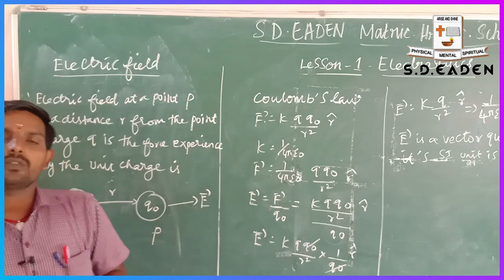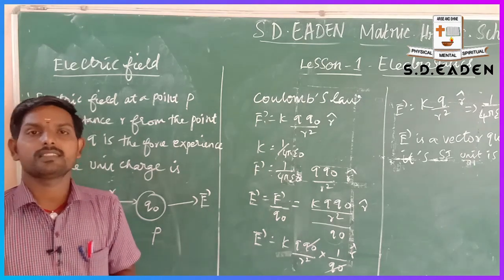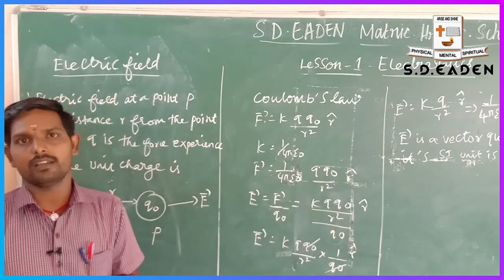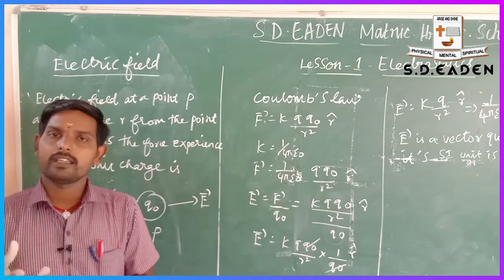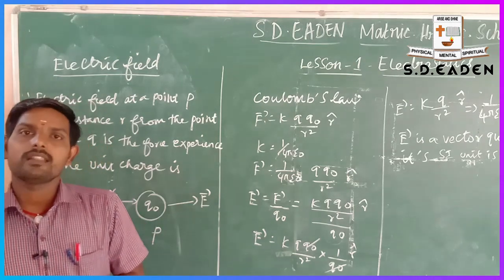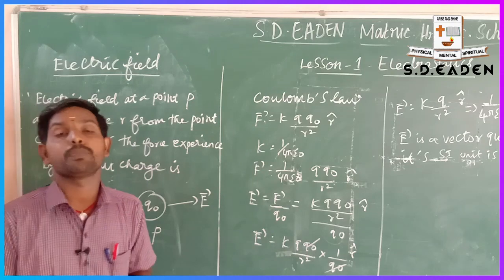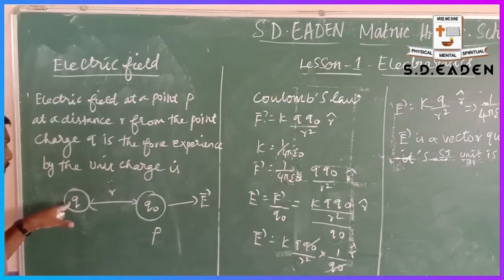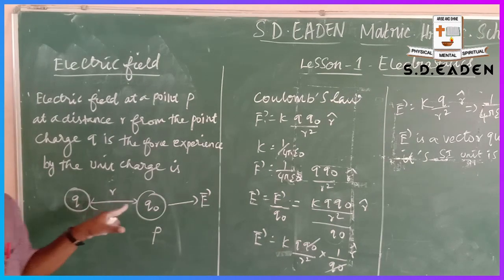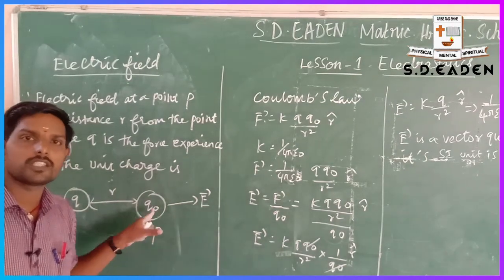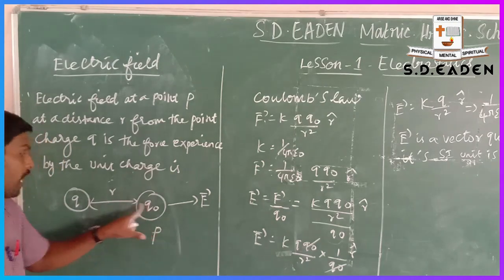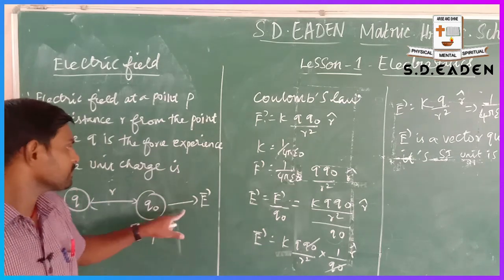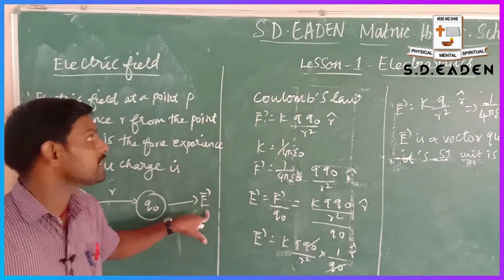The scientist Michael Faraday explained the concept of electric field — what it means and how it is formed. According to Faraday, every charge in the universe creates an electric field. If we consider one charge q, and another charge is placed at a distance r, it experiences a force. If a test charge q0 is placed at point P at a distance r, the force experienced is called the electric field.